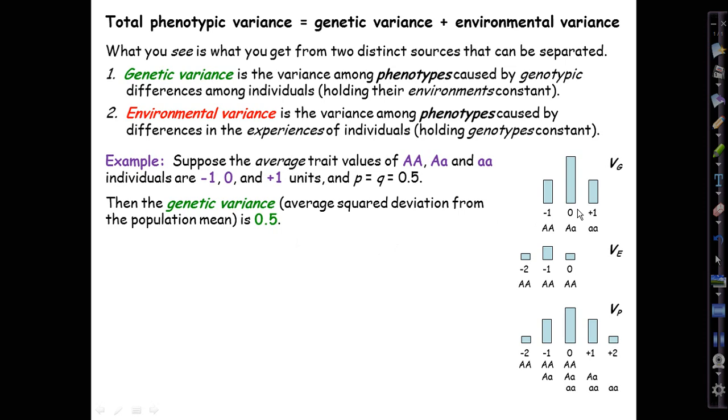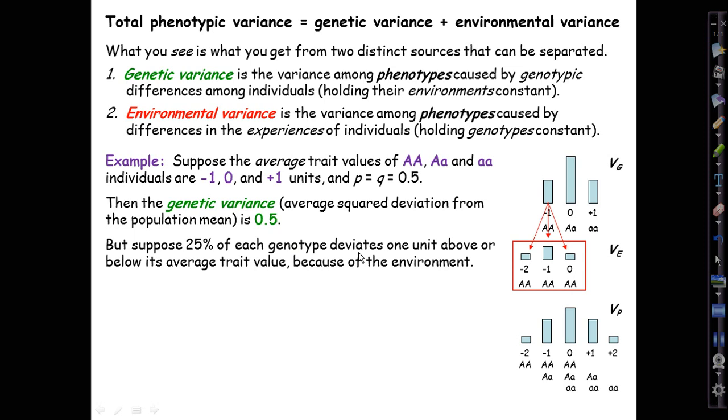That's only true under these assumptions that the genetic effects are to move the phenotype on average down one unit or up one unit and that the alleles are equally frequent. So we have 25%, 50%, and 25% of the three genotypes. But on that assumption, then the genetic variance will be a half. That's because half of the individuals are one unit away from the mean, which is zero. The other half of the individuals are no distance from the mean, so they contribute nothing. And so half of one squared, which is the squared deviation, is a half. That's where the genetic variance of a half comes from.